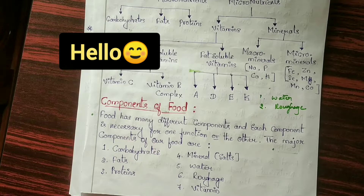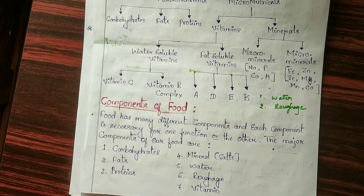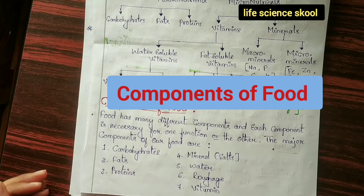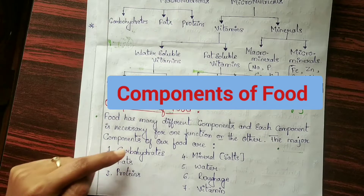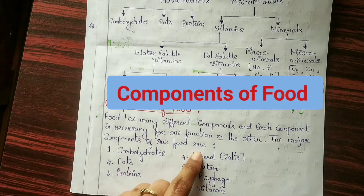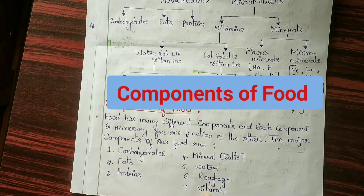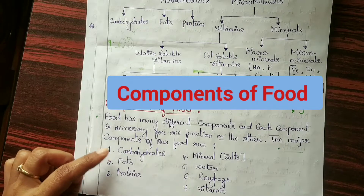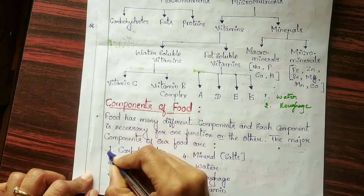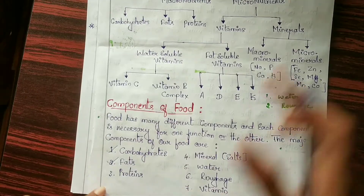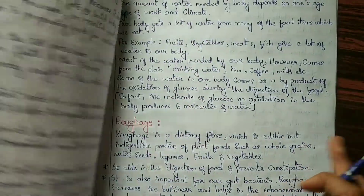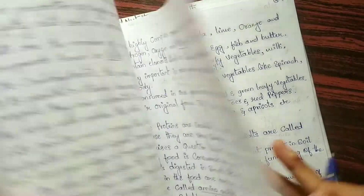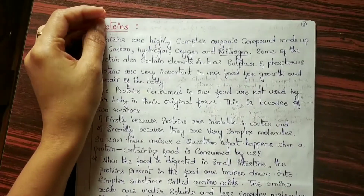Hello everyone, welcome back to my video channel. This video is about the components of food. We know that we have carbohydrates, fats, proteins, minerals, water, roughage, and vitamins. In the previous videos I discussed carbohydrates and fats as part one, and in part two I discussed proteins, minerals, and vitamins. Now in this video we will discuss the remaining components of food: water and roughage.